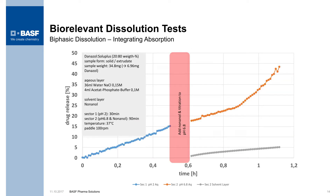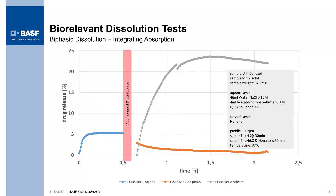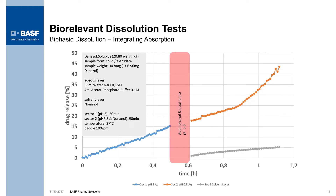Looking at it from another perspective: a similar system, but in this case using soluplus and danazol at a 20% to 80% weight ratio as an amorphous dispersion. You're seeing a much more controlled aqueous solubility. Once the nonanol is added, you can see the system still retaining a fair amount of drug in the aqueous phase, with slow growth within the solvent phase as well. This is completely different compared to the previous slide where drug immediately jumps into the oil phase — here the soluplus is really helping to keep drug in the aqueous phase.